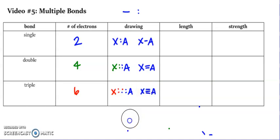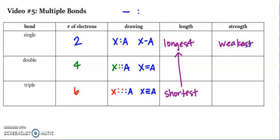When it comes to length and strength, this is just relative, what we're writing here. Relative to each other, single bonds are the longest and triple bonds are the shortest, so that would make double bonds in between. In terms of strength, single bonds being the longest are your weakest, which makes your triple bonds the strongest.